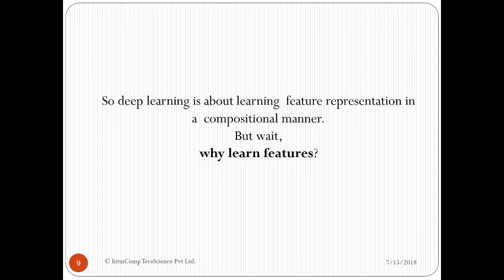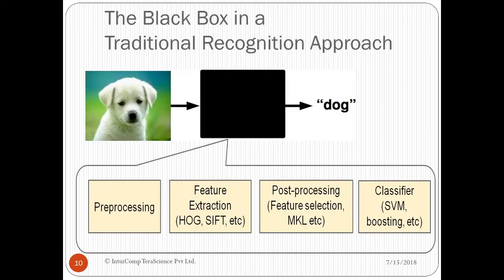The black box in a traditional recognition approach: these hidden layers can be used for pre-processing of data, which is basically removing unnecessary data before we feed it to our network. Extraction of features can be done using techniques like HOG, SIFT, etc. Post-processing includes selection of relevant features out of the features that has been extracted. Finally, a classifier function is used to make predictions.